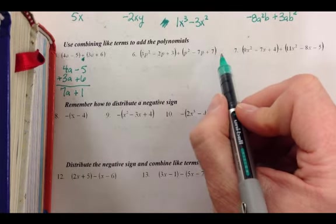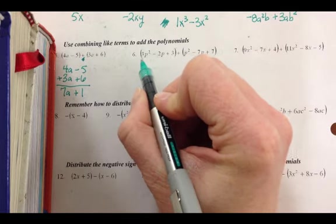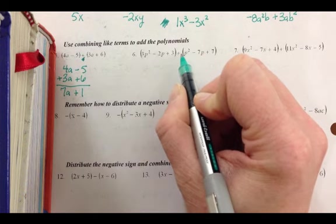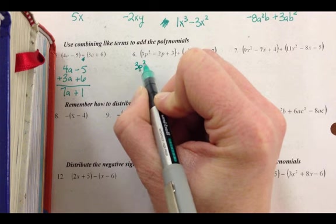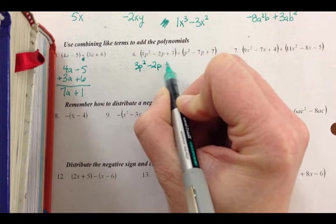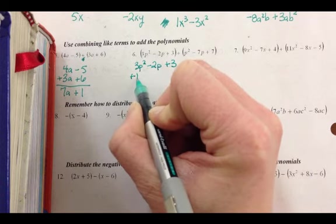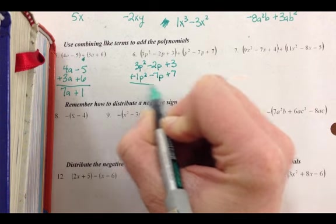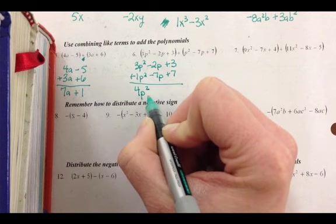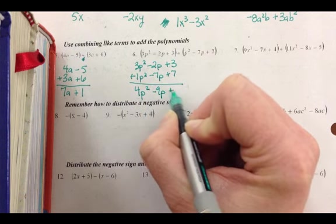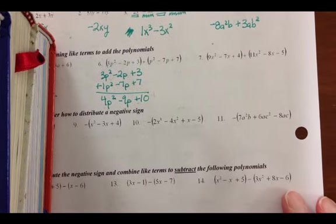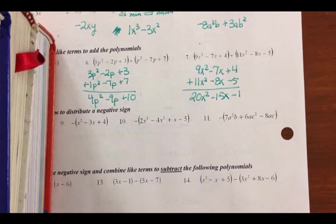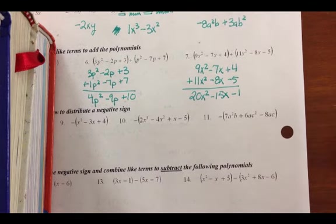Let me show you again with a longer problem. See how big these get? So if I have this problem, I'm going to line up my like terms. First, I'm going to check for any distributive properties. So it's a positive 1 out front and a positive 1 out front. So I have 3p squared minus 2p plus 3. And that's plus 1p squared minus 7p plus 7. So when I combine my like terms, I get 4p squared minus 9p plus 10. Give number 7 a try. Come back, check your work. So number 7. You lined up your like terms, combined everything, and got your answer.